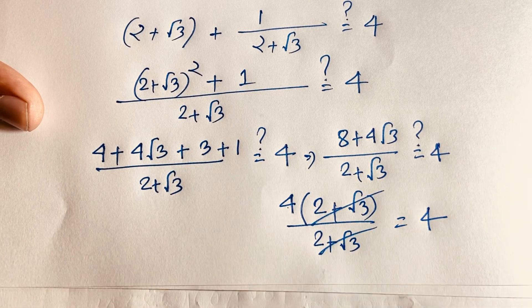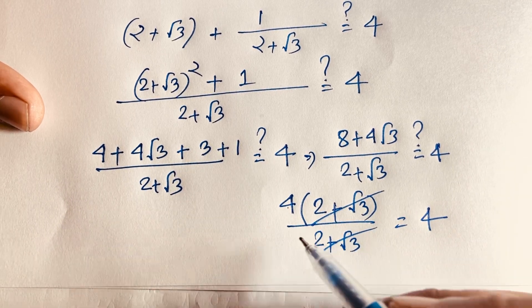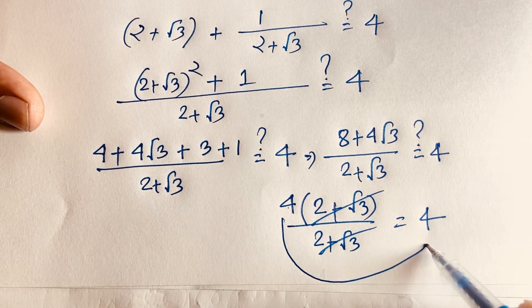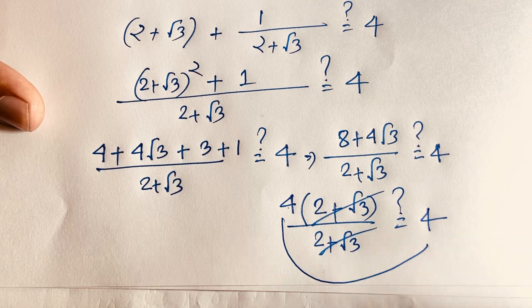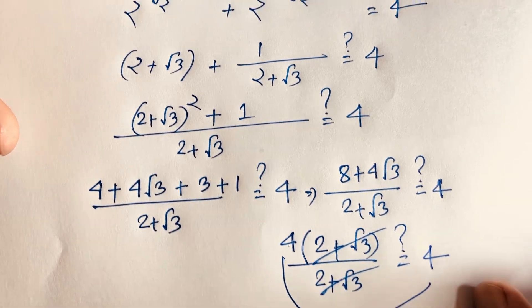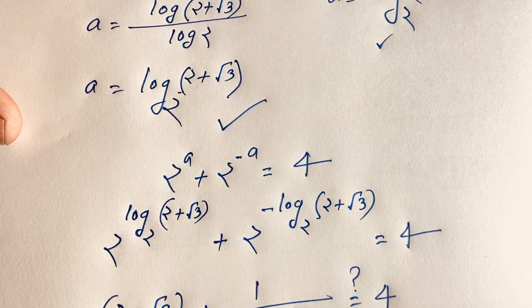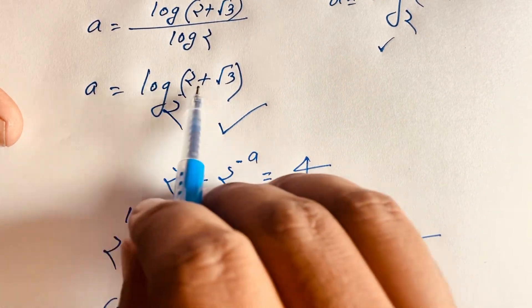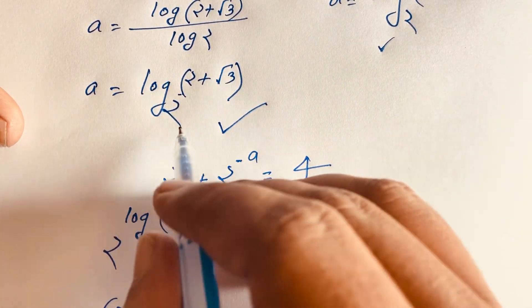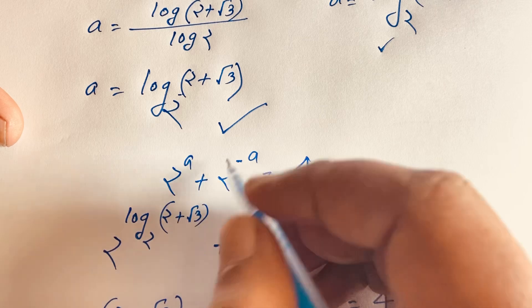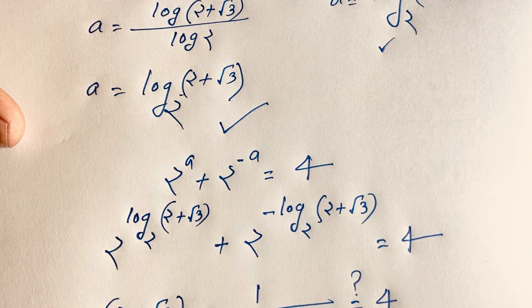The (2 + √3) terms cancel, leaving 4 = 4. This confirms our answer. Therefore, a = log base 2 of (2 + √3) is our final answer to this Math Olympiad question.